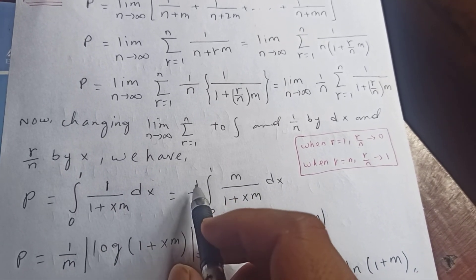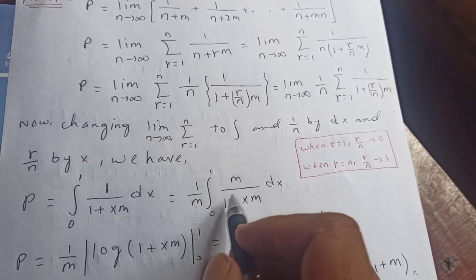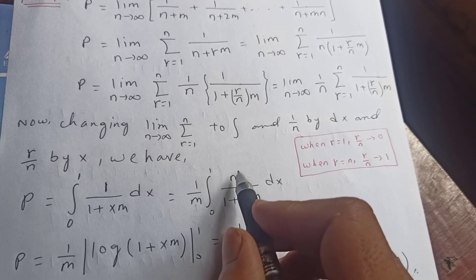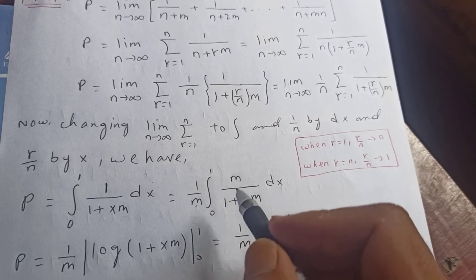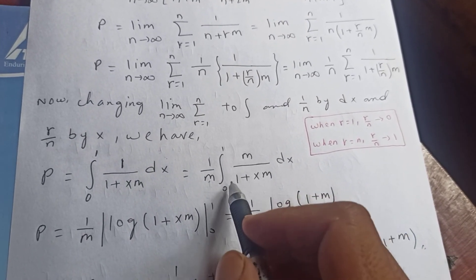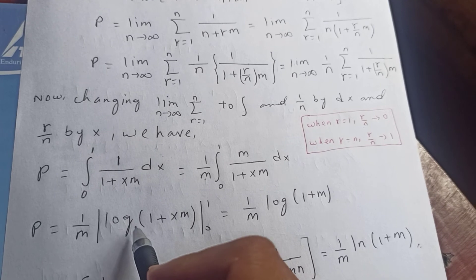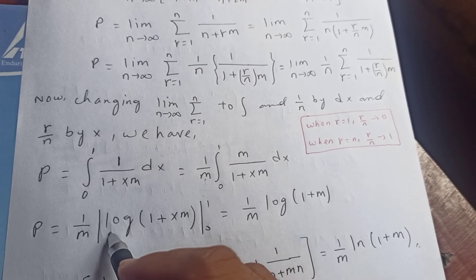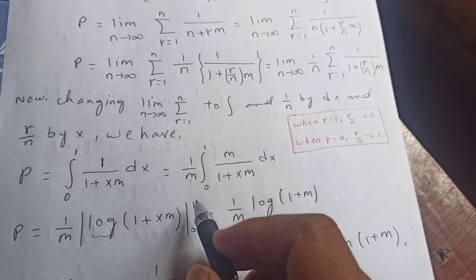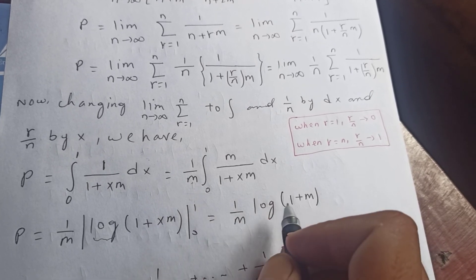So P equals the integral from 0 to 1 of m over (1 + xm) dx. We write it this way because the derivative of the denominator gives us m in the numerator, so the integral is the natural log of the denominator: ln(1 + xm) evaluated from 0 to 1. When x = 1 we get ln(1 + m), and when x = 0 we get ln(1) = 0.